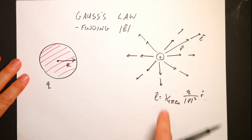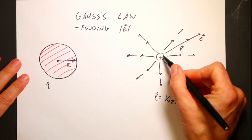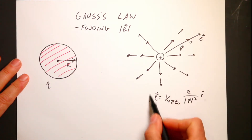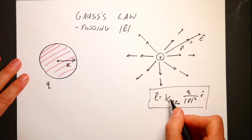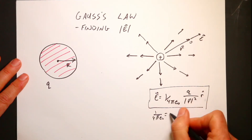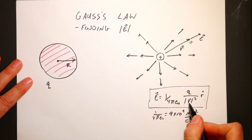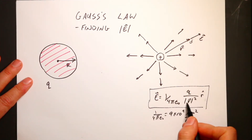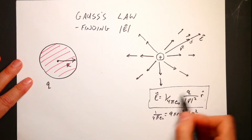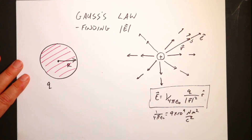Gauss's Law — imagine I have this point charge and I want to calculate the electric field. If I find some point in space, I can calculate the electric field. I need to know the value of the charge Q and the vector from the charge to the observation location. The vector electric field is 1 over 4π epsilon-naught — which equals 9 times 10 to the 9th newton-meters squared per coulomb squared — times Q divided by the magnitude of the distance squared, times R-hat, a unit vector giving the direction. If the charge is negative, the field points inward.